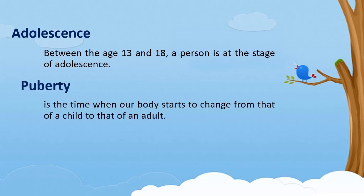Puberty is the time when our body starts to change from that of a child to that of an adult. During puberty, your body will grow faster than at any other time in your life, except for when you were a baby. It helps to know about the changes that puberty causes before they happen, so you know what to expect.